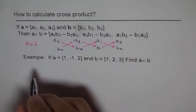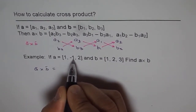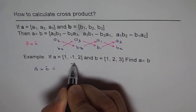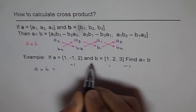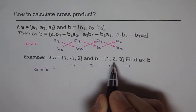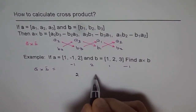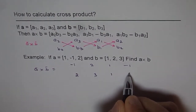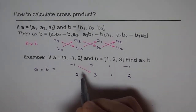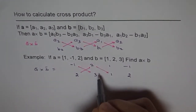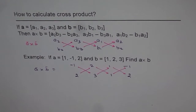Let's work through an example of a cross b. We start with the center number, which is minus 1, and write the sequence: minus 1, 2, 1, minus 1. Then for the second vector, starting with the center number 2: write 2, 3, 1, and end back with 2. Now we multiply this and take away this, multiply this take away this, multiply this take away this — giving us our answer.